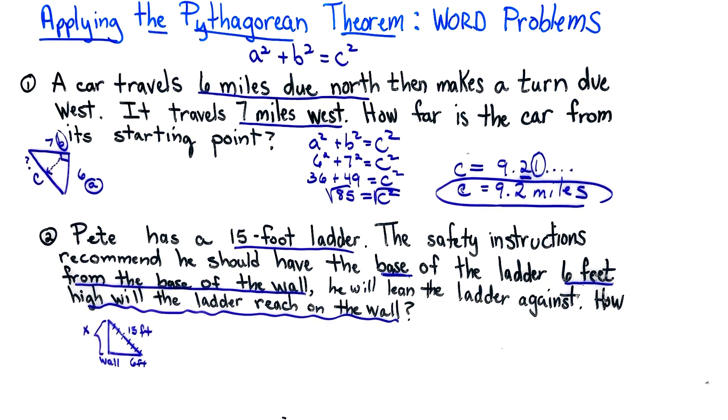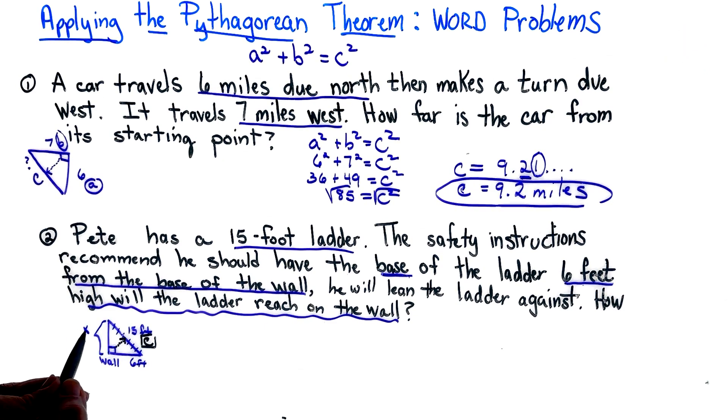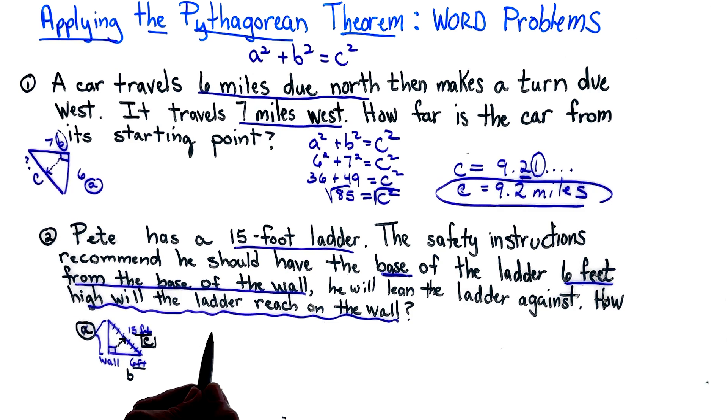They want us to find how high up on the wall does this ladder reach. So we're looking for this distance, I'll call it x for right now but then we're going to decide is it a, b, or c. Our building is standing straight and that's why we have our 90 degrees there. You can always assume your building will be standing straight. This is my letter c, so we have the hypotenuse. I'm going to call this a and this b.